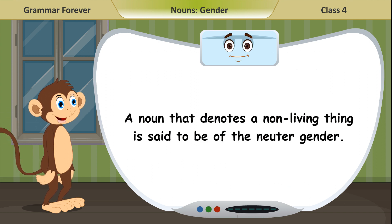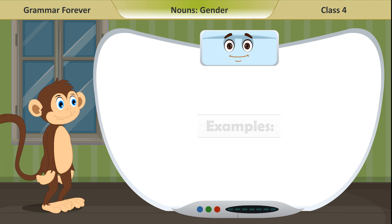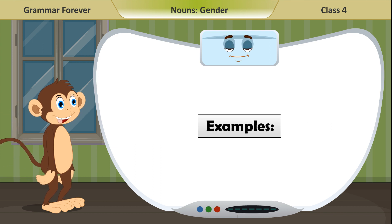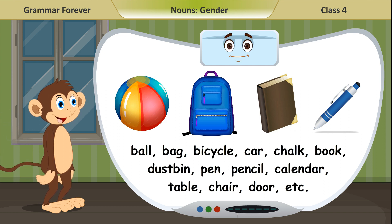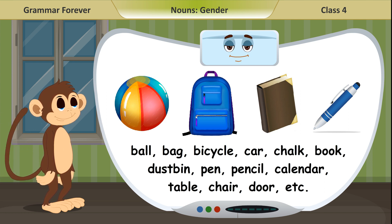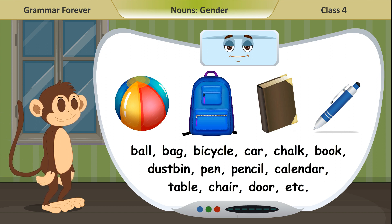A noun that denotes a non-living thing is said to be of the neuter gender. Examples: ball, bag, bicycle, car, chalk, book, dustbin, pen, pencil, calendar, table, chair, door, etc.